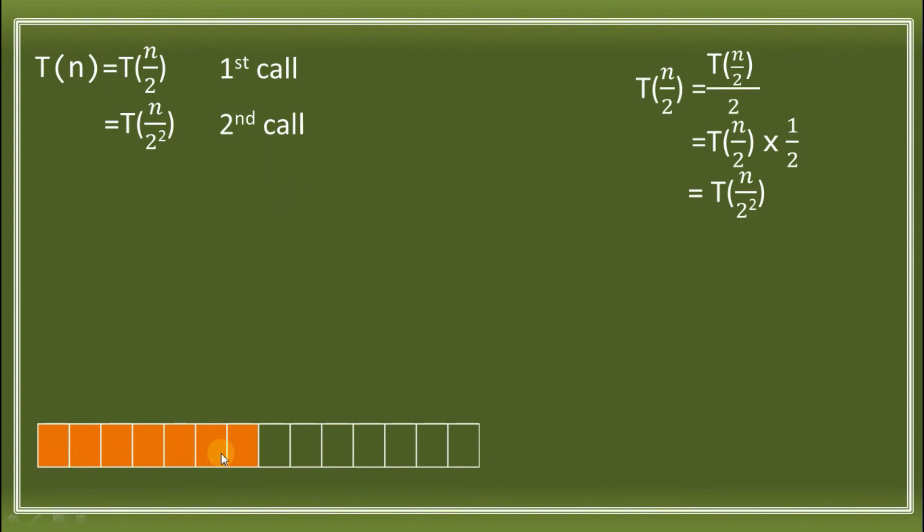Basically, this split from the first call will split again into another part. This is the middle part. According to the rule, if the middle is not the element, we'll take either the left part or the right part. Let's say we stay on the left part. What if we have another call, a third call? We need to find the value of T(n/2²). Using the substitution method, we have T(n/2²). We know the value of T(n). The value of T(n) is T(n/2). Then, we have over 2². Same as what we did earlier, we use multiplication. Then we'll make 2² a fraction. We have T(n/2) times 1/2². We have T(n), then 2 times 2², that is 2³.